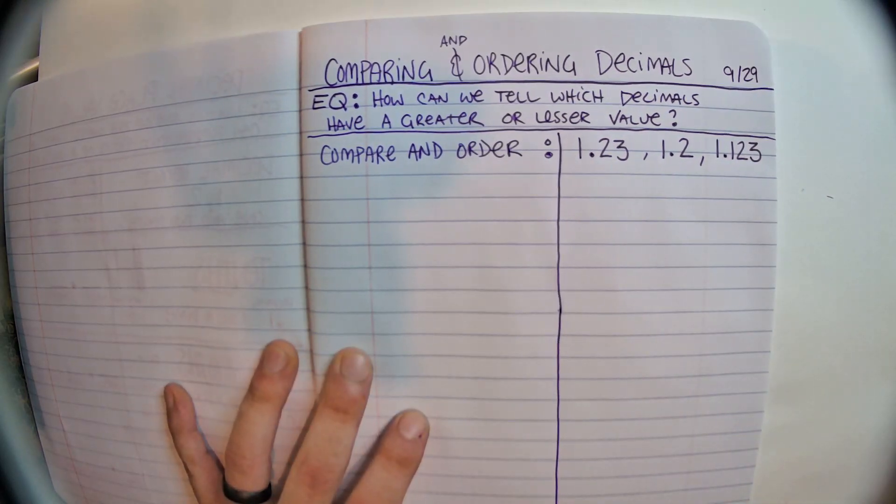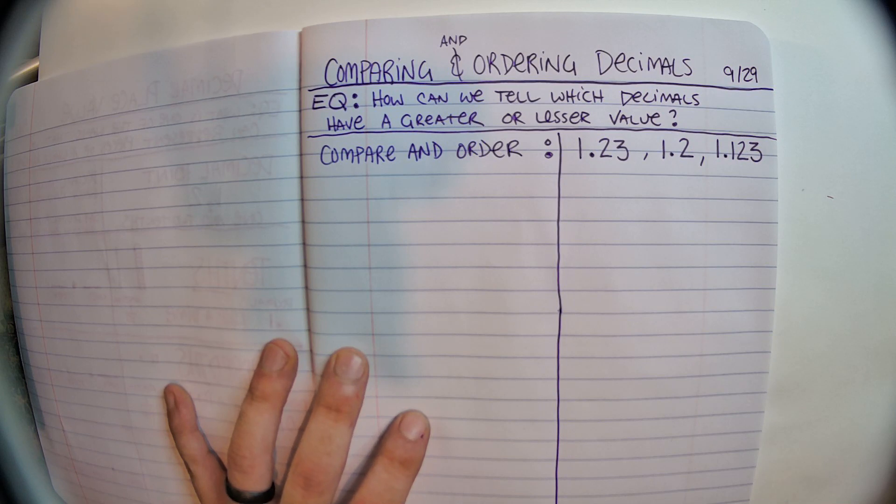So we're going to look at those three numbers and we're going to try and find a way to put them in order, or compare them to find out which one is greater or lesser. So we'll do that when we come back. See you in the next video.